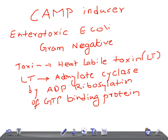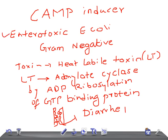What is the pathogenesis? The heat labile toxin, along with the heat stable toxin, promotes the secretion of fluids and electrolytes from the intestinal epithelium into the lumen, and that leads to diarrhea. So the first cyclic AMP inducer is enterotoxic E. coli.